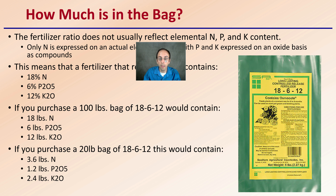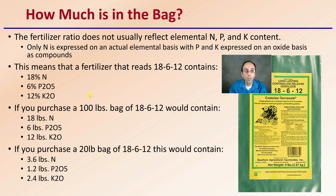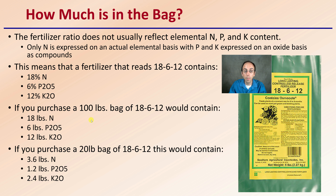The fertilizer ratio does not usually reflect the elemental nitrogen, phosphorus, and potassium. Only nitrogen is expressed on an elemental basis; P and K are expressed as the oxidized compounds because those are the plant-available ones. A fertilizer that reads 18-6-12 contains 18% nitrogen, 6% phosphorus, and 12% potassium as plant-available amounts. A 100-pound bag would contain 18 pounds nitrogen, 6 pounds phosphorus, and 12 pounds potassium. A 20-pound bag would have 3.6 pounds nitrogen, 1.2 pounds phosphorus, and 2.4 pounds potassium — important when calculating application rates.